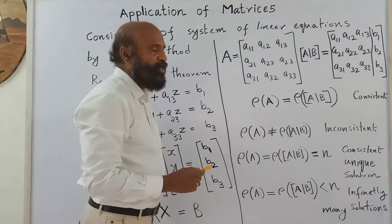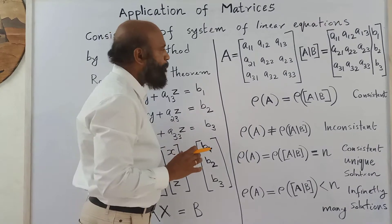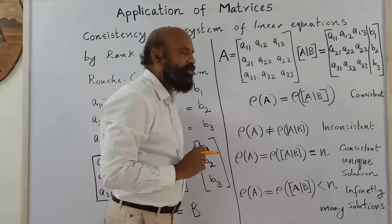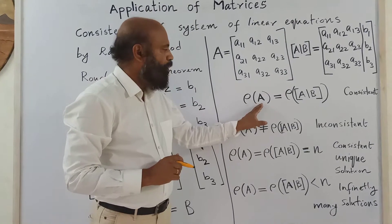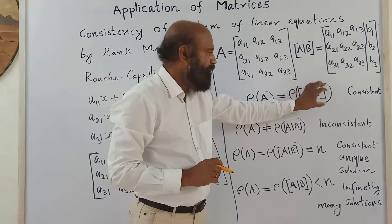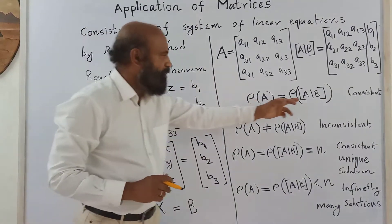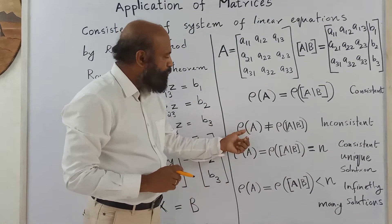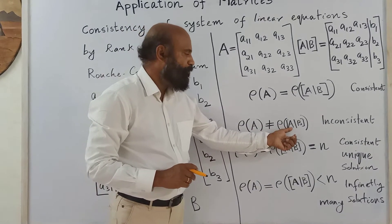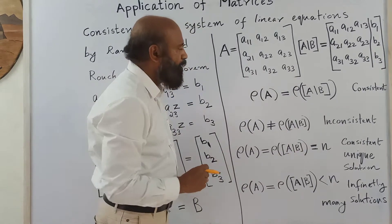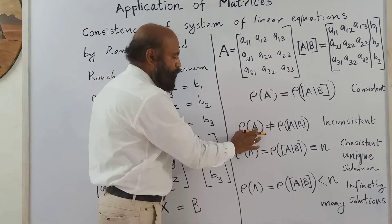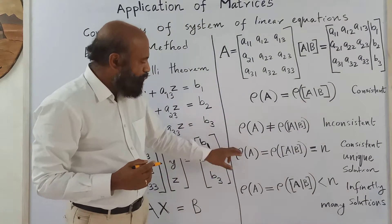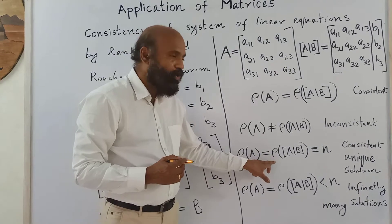You find the rank of the coefficient matrix and the rank of the augmented matrix. If both are equal, the system of equations will be consistent — there will be a solution. If the rank of the coefficient matrix is not equal to the rank of the augmented matrix, the system is inconsistent.